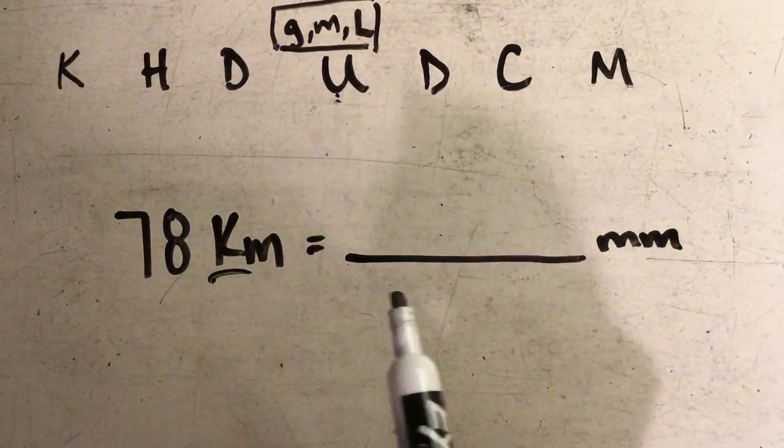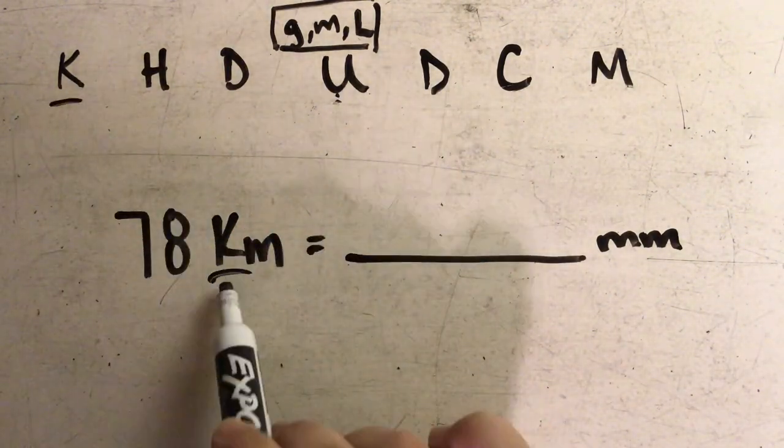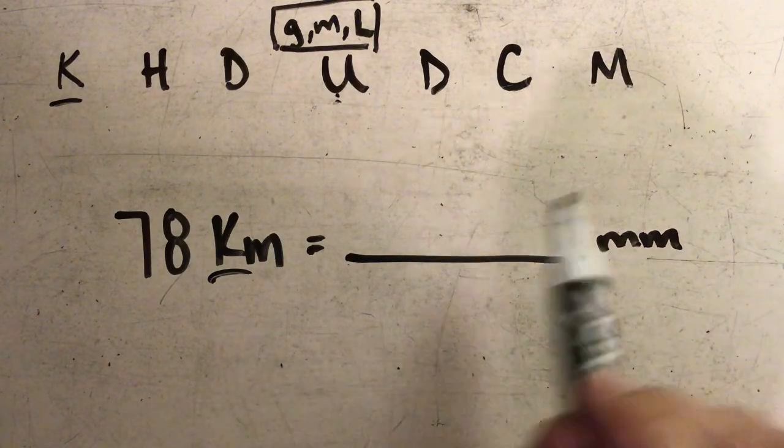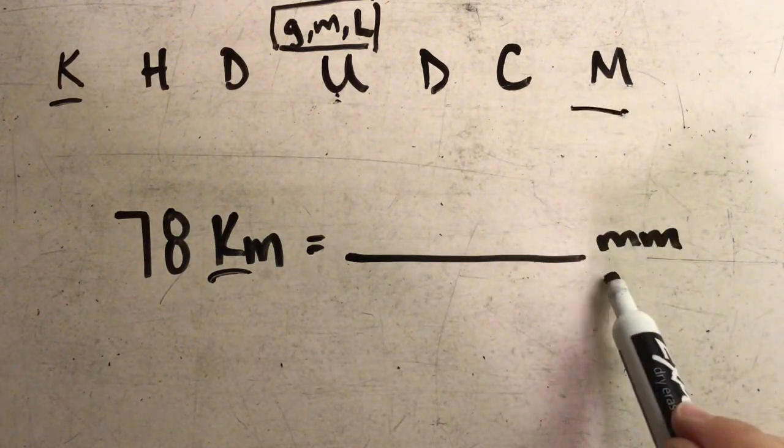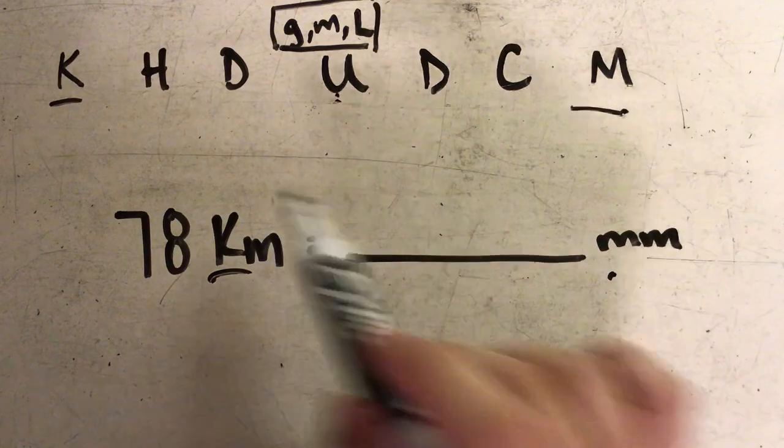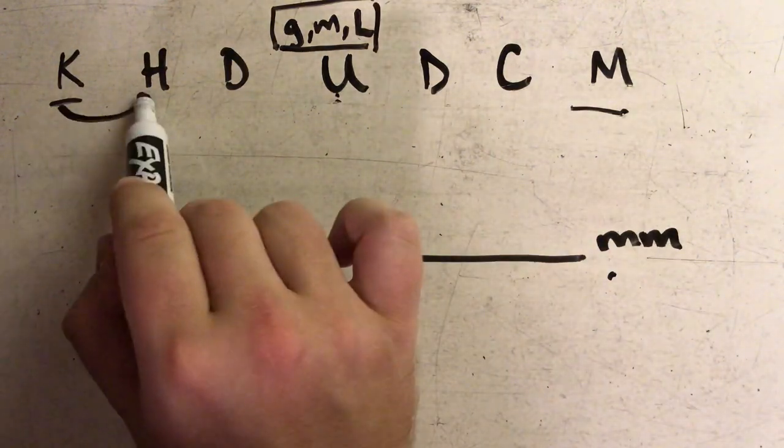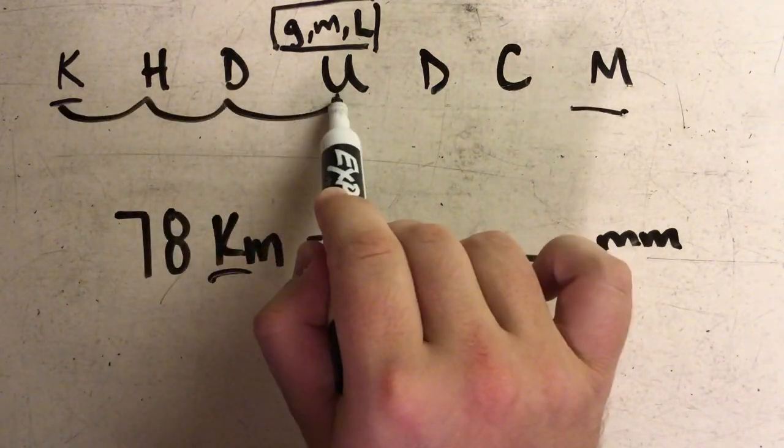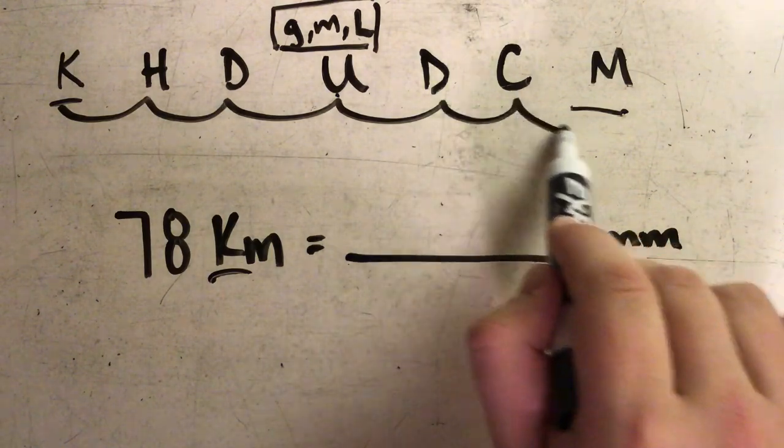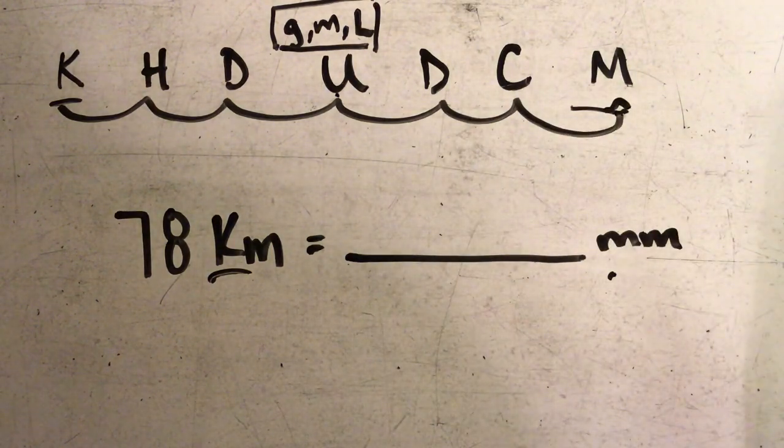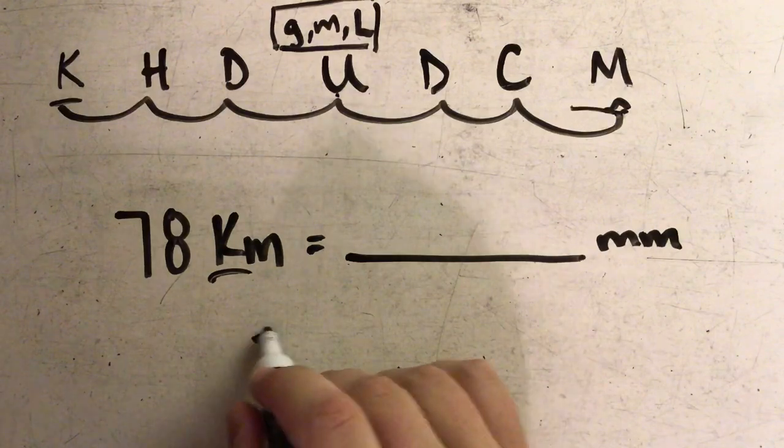Again, I'm going to start where my K is, because that's what I'm given, and I need to move all the way down here to get to millimeters. So I'm going to count that many spaces: one, two, three, four, five, six. So I need to move my decimal point six places as well.